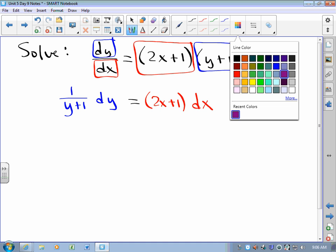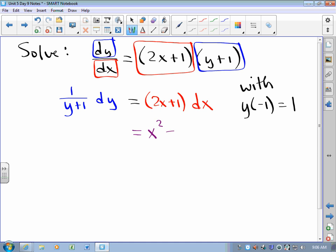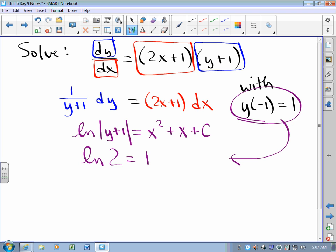We integrate on both sides. It's easier to integrate on the right side than it is on the left side. So now I know with my initial condition that the natural log of 2 is (-1)^2 + (-1) + C. So I know that ln|y+1| = x^2 + x + ln 2.